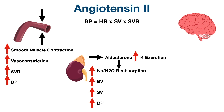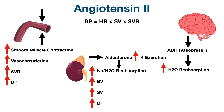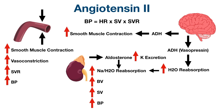Aldosterone also increases potassium excretion in the urine, which will become important when we talk about the side effects and contraindications of ARBs. The final major effect of angiotensin 2 is that it stimulates the release of antidiuretic hormone, also known as vasopressin, from the posterior pituitary gland. Antidiuretic hormone acts on the collecting duct to facilitate water reabsorption, increasing blood volume, stroke volume, and blood pressure. There are also vasopressin receptors on blood vessels, and when activated, they cause smooth muscle contraction, increased vasoconstriction, and increased blood pressure.